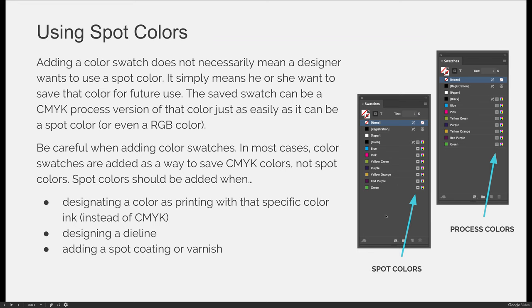However, if you choose any of the inks from the left-hand side — or worse, if you choose all of them — you will need to purchase green, red-purple, yellow-orange, purple, yellow-green, pink, and blue ink. So you'll need a printing press that can have at least seven printing towers.